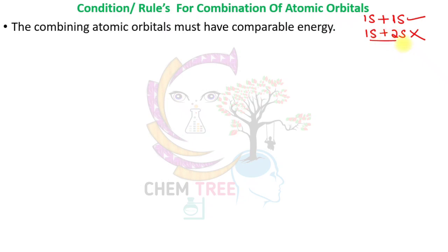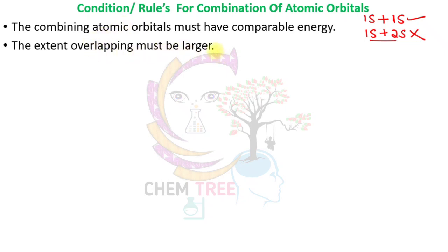Therefore, 1s and 2s are not forming a molecular orbital. The second rule is that the extent of overlapping must be larger. If the overlapping is maximum, the energy of the molecular orbital decreases, and as energy decreases the molecule becomes more stable.